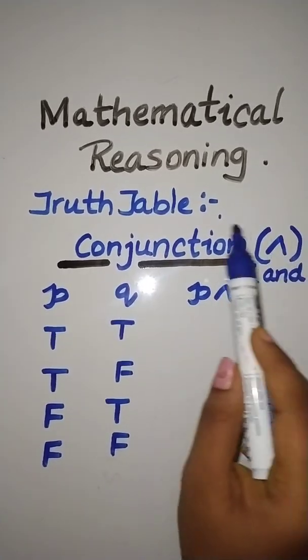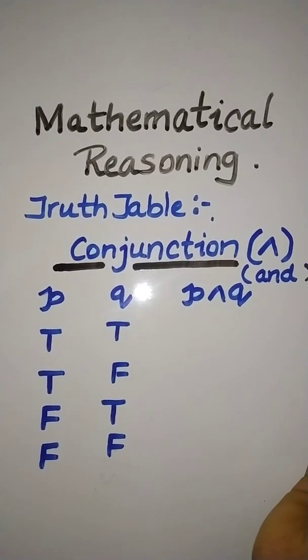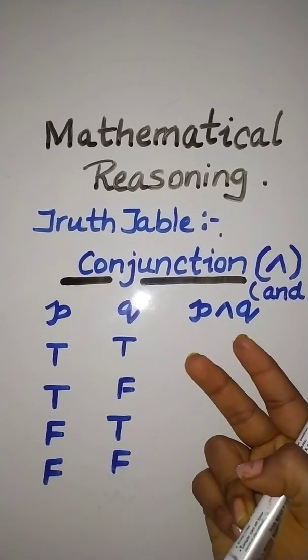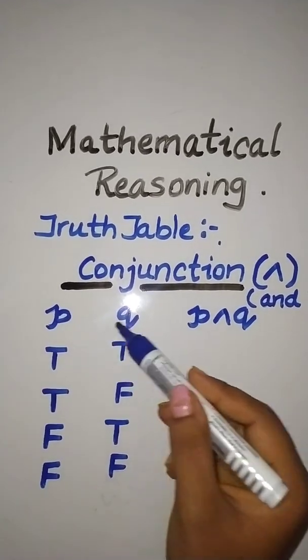Basically this conjunction is similar to intersection. So here intersection also we have usually two values, right? So I have taken two values here,